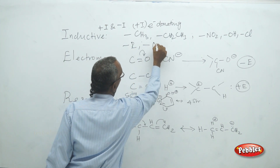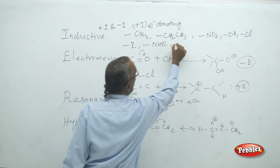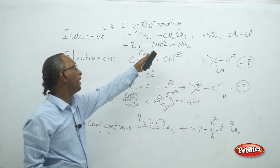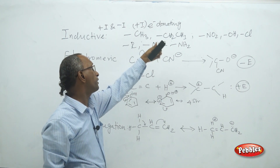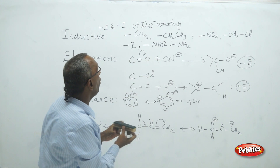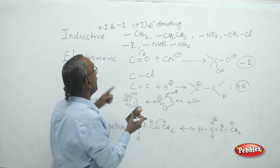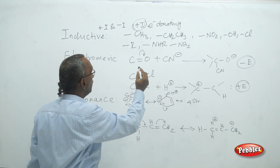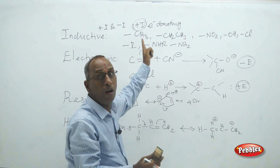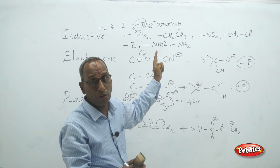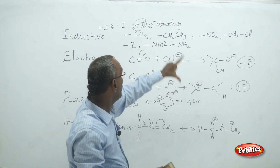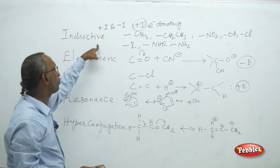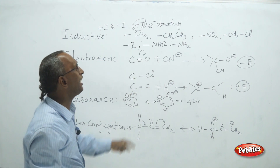Alkyl-substituted amines — such as monosubstituted amines (NHR) and disubstituted amines (NR2) — also donate electrons. These electron-donating species are called plus-I effect groups. Remember that all these are only groups, not complete compounds. Electron-donating groups are identified as plus inductive effect groups.